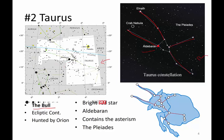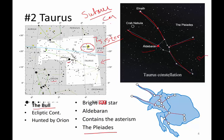Taurus is between Aries and is near Orion and Perseus. Another thing I wanted to mention is that this constellation contains the asterism the Pleiades. The Pleiades are called the seven sisters — those seven stars. If you ever see a Subaru car, the stars on the front of the Subaru are supposed to represent the Pleiades, which are the seven sisters.